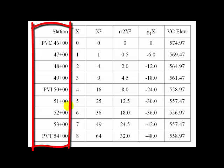Each of our stations here is 100 feet apart. So, X from 47 plus 00 back to the PVC is 1. That is 100 feet divided by 100 gives us 1. So, if we progress across the chart, we can see that here at 47, we have a value of X.